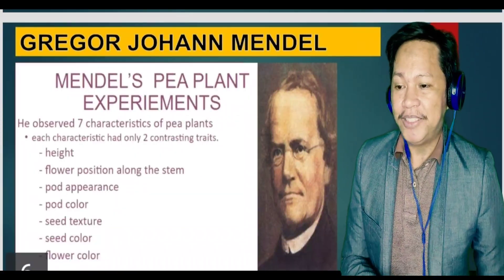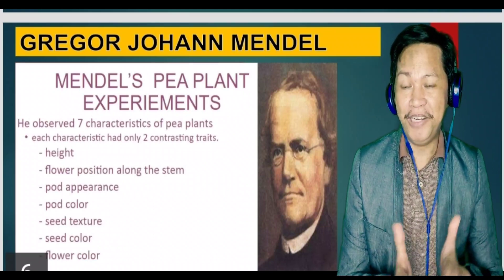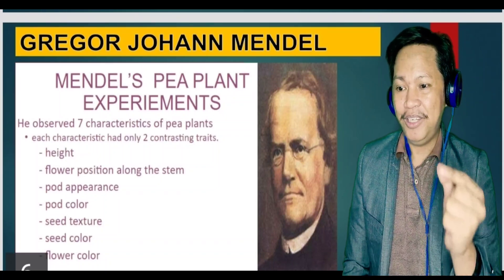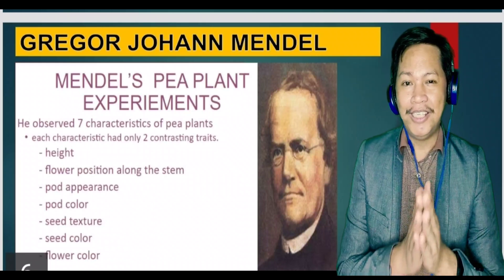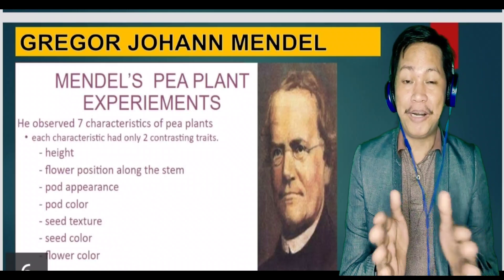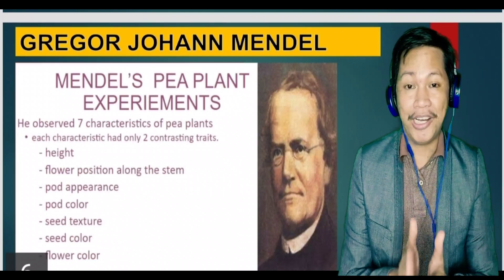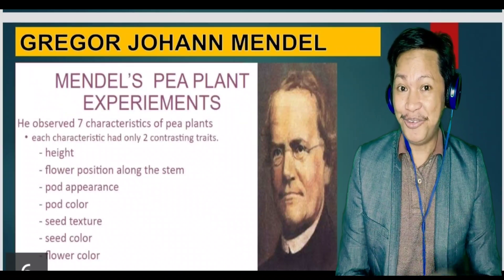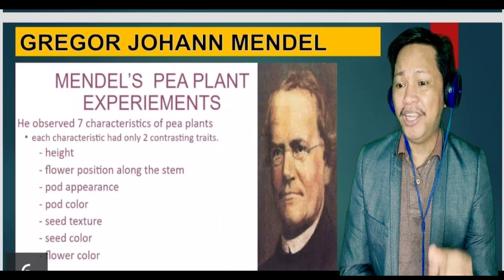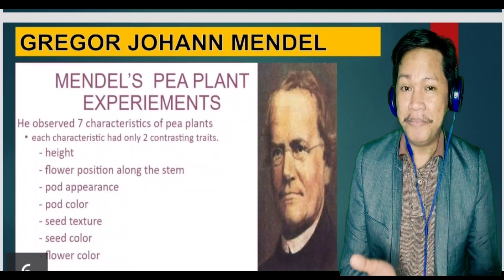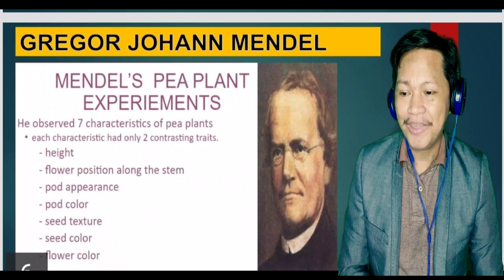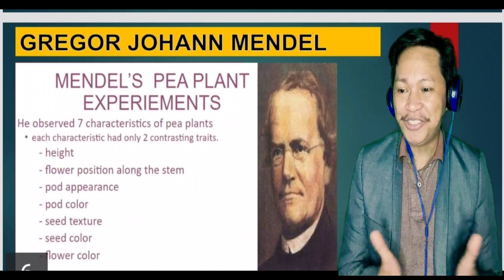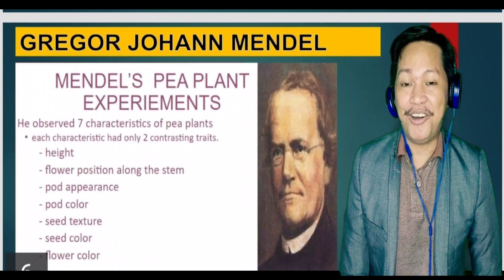In his experiments, he observed seven characteristics of pea plants. Each characteristic had only two contrasting traits — two opposing or contradicting features. For example, for height, the contrasting characteristics are tall or short. Other characteristics include flower position along the stem, pod appearance, pod color, seed texture, seed color, and flower color — each with two contrasting features.